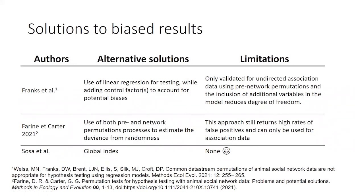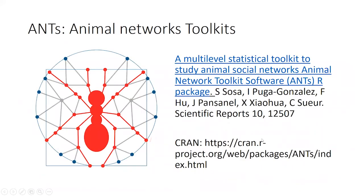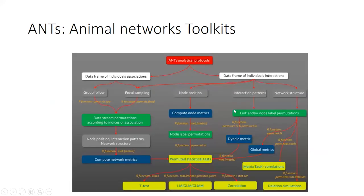Solutions to these biases include using linear regression for testing while adding control factors to account for potential biases, though this has some limitations. You can also use both pre-network and network permutation processes to estimate deviation from randomness — though that is a newer approach still with some limitations. Sebastian Souza is now proposing a new global index with no limitations or biases. We also built an all-in-one tool package called ANTS to perform all analyses in a single tool and make it easier to use.